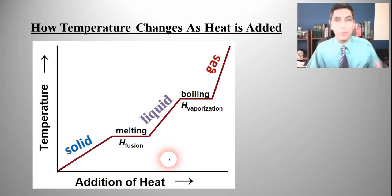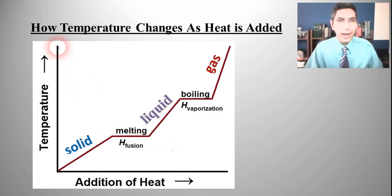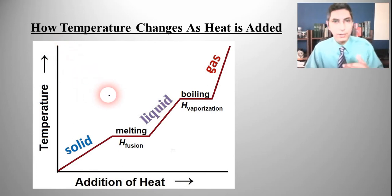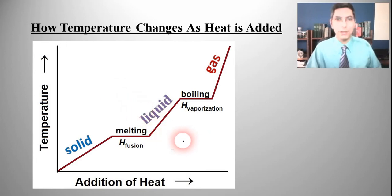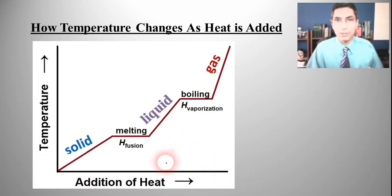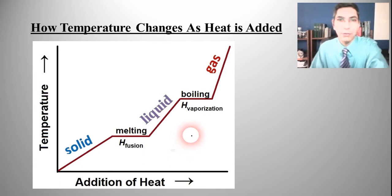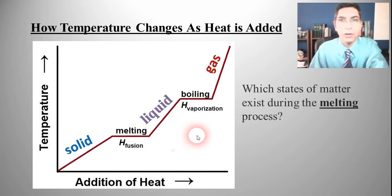We can do the opposite with a cooling curve — start with a gas and watch its temperature go down, then have condensation where the temperature stays constant, then the liquid temperature would go down, then you'd have freezing at a constant temperature, and then it would continue dropping as a solid. So we could do basically just the reverse of the heating curve for a cooling curve.